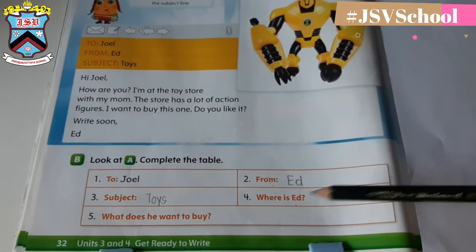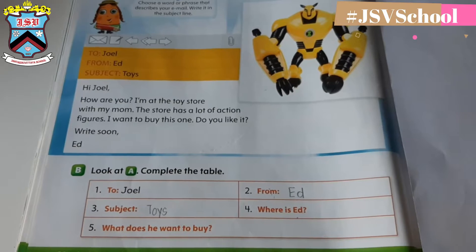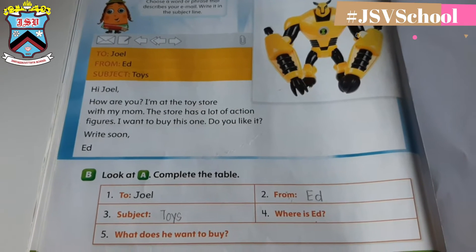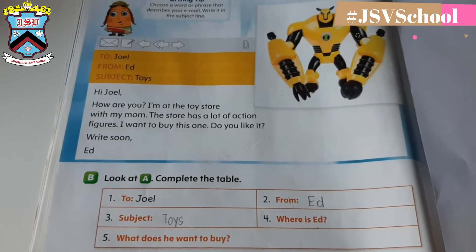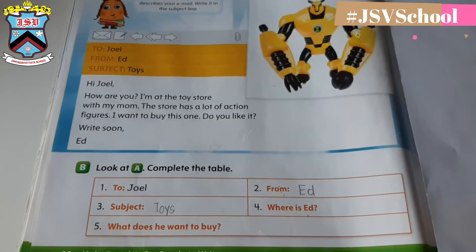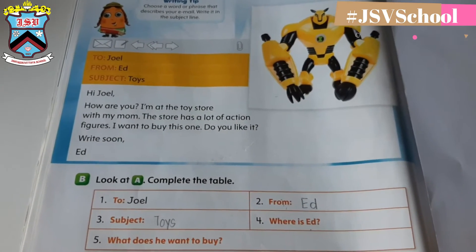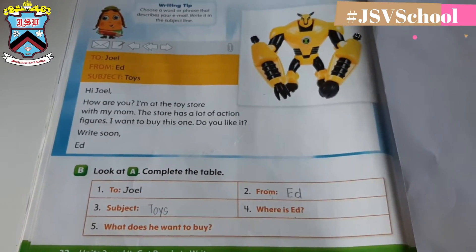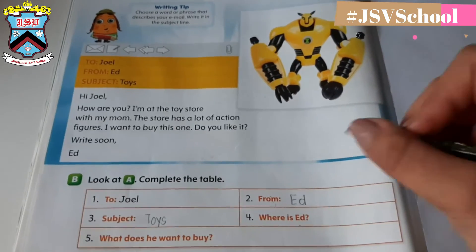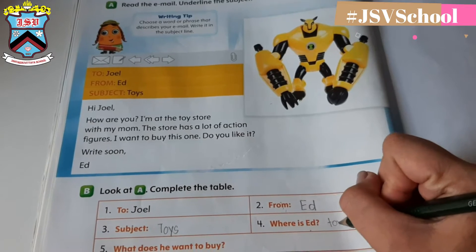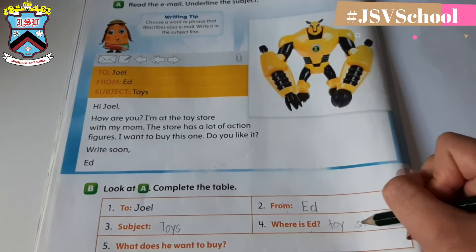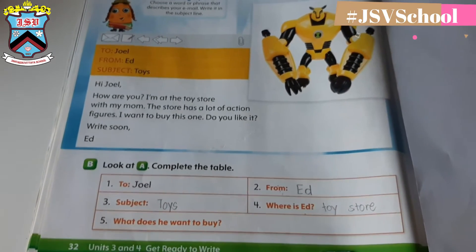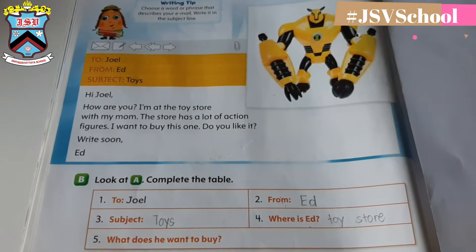Number four: where is Ed? Where did Ed go? Can you still remember from the e-mail? I'm at the toy store with my mom. So Ed is at the toy store. Let's write here: toy store — T-O-Y S-T-O-R-E. That is where Ed is.